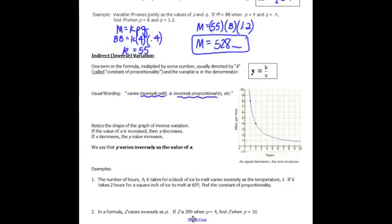If you look at the graph, it's saying as speed decreases, time increases. You can also think of this as my speed is lower, it's going to take me longer. At a slower speed, it takes me longer to get to wherever I'm going. This is the shape of an inverse variation. If the value of x is increased, then y decreases. If x decreases, y increases, and y is varying inversely with x.